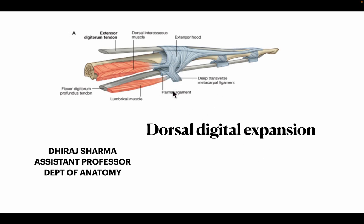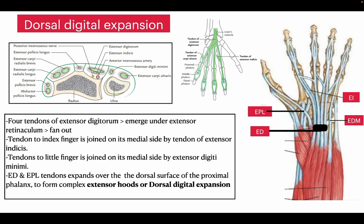We have to know the function of the dorsal digital expansion in detail. To understand it, we need to know two main muscles: the extensor pollicis longus and the four tendons of extensor digitorum. The extensor pollicis longus goes towards the thumb, while the four tendons of extensor digitorum go towards the index, middle, ring, and small fingers. In the index finger, it is also joined by the extensor indices from the medial aspect, and in the small finger it is joined by the extensor digiti minimi muscle.